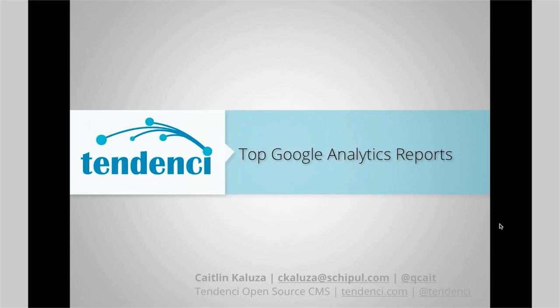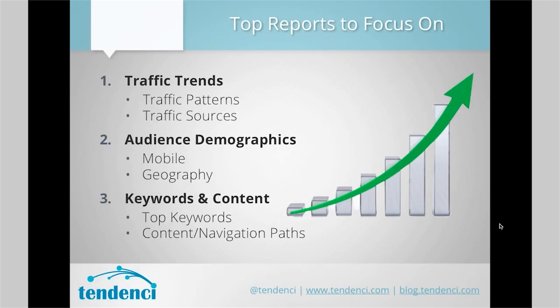Now we're going to look at the most important reports. We split these top reports into three categories: traffic — where do people come from; audience — who are these people, where are they, what devices are they on; and keywords and content, which is a big meaty piece I'm saving for last not because it's least important but because there's a lot to talk about.